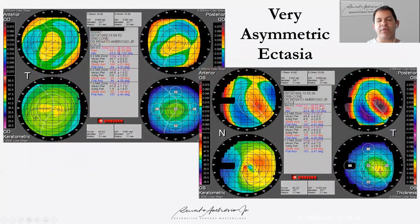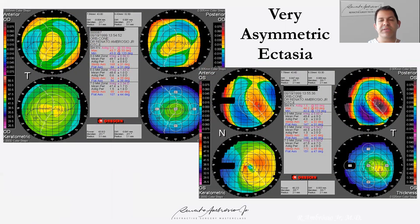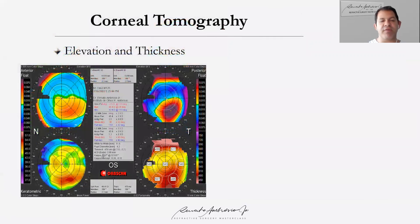At that time, we were talking about enhancing diagnosis, and cases with very asymmetric presentation intrigued us. We were talking about unilateral disease. Today, we have a more evolving concept of bilateral keratoconus, very asymmetric keratoconus, and eventually unilateral ectasia due to mechanical forces. It's important to understand that we are evolving.